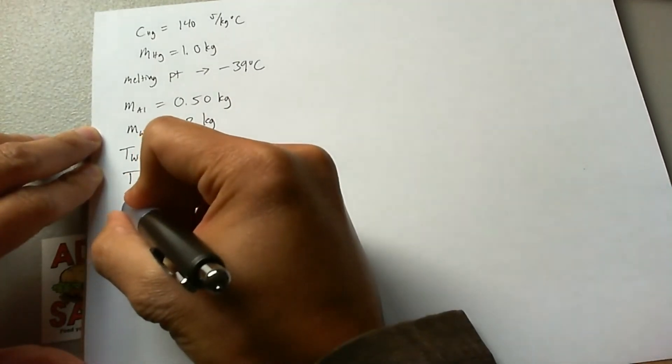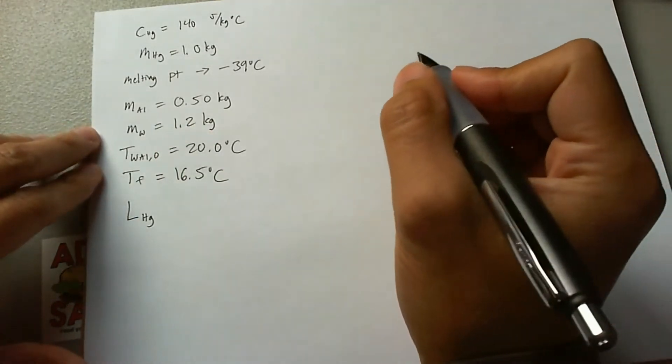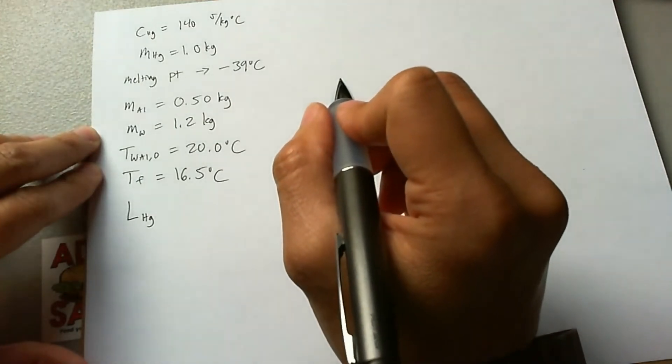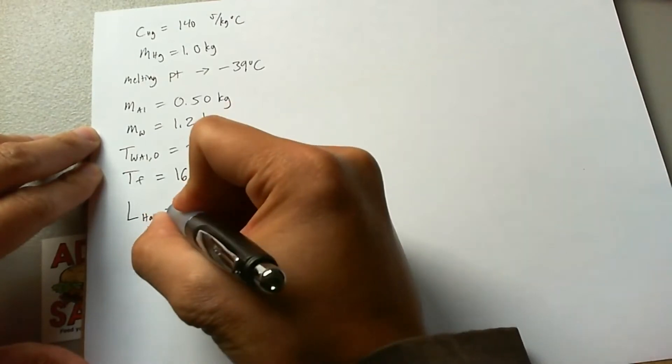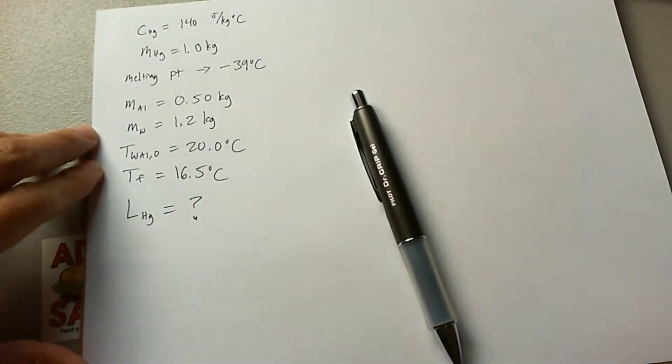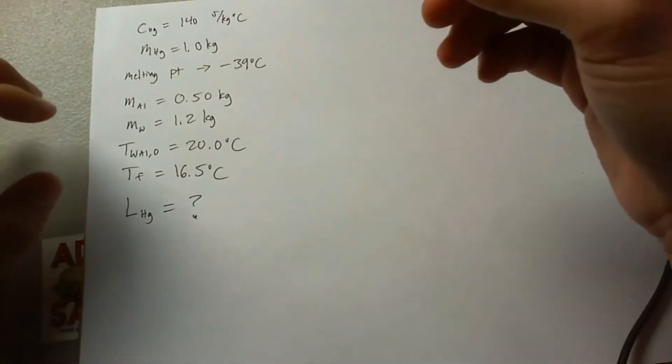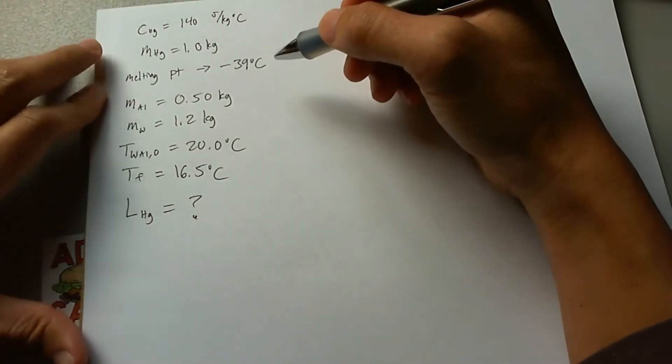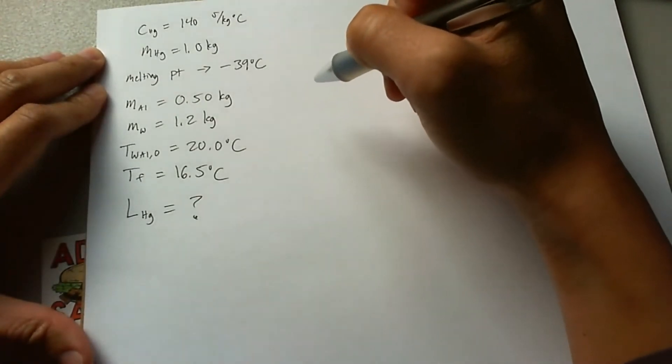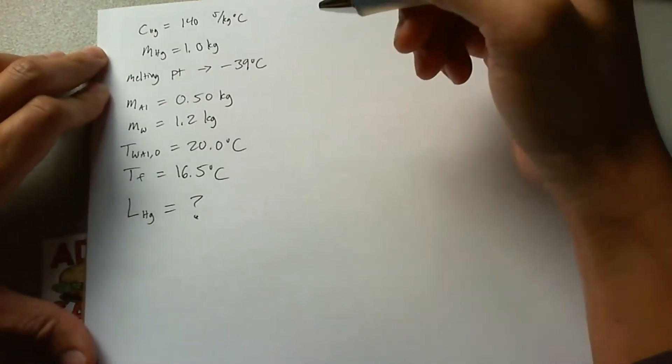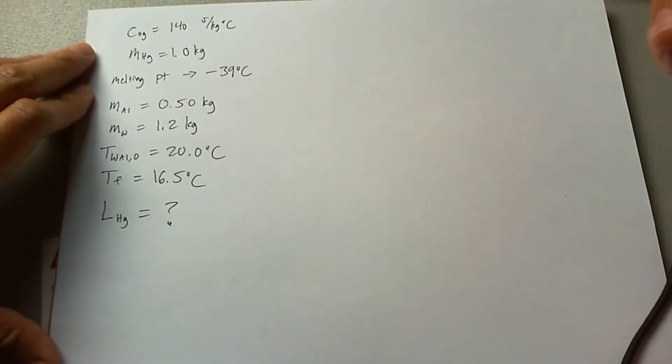And what we're looking for is the latent heat of fusion for mercury. I say latent heat of fusion because fusion is the energy that it takes to make something from a solid to a liquid or liquid to a solid. One of the cool hints we got here is that we have solid mercury at a melting point of negative 39 degrees Celsius when it's placed into the calorimeter of warmer water, so that means that there's not going to be any sort of temperature change before the mercury melts.